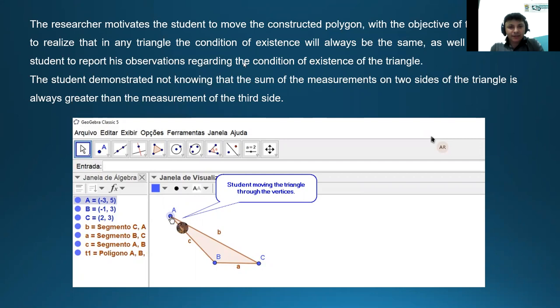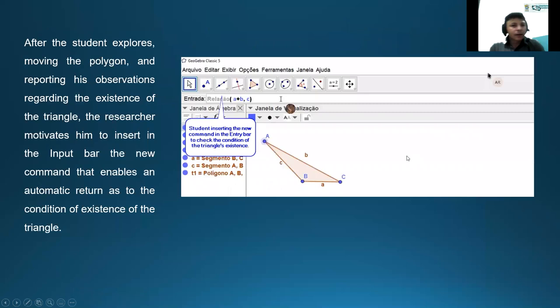Here, some objects constructed by our students. Here the students demonstrate in this moment of the activity, not knowing that the sum of the measurements on two sides of the triangle is always greater than the measurement of the third side. So in this moment, the students are learning the proof about the construction of any triangle. In the next slides, we can see some considerations about it.